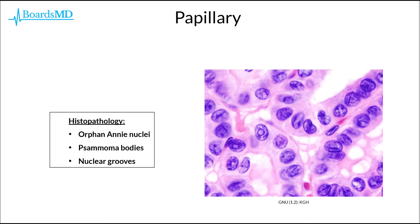Papillary carcinoma of the thyroid has these classic histopathologic features. We can see the presence of orphan Annie nuclei, which can be appreciated here where we can see this central clearing — this is pretty classic for orphan Annie nuclei.